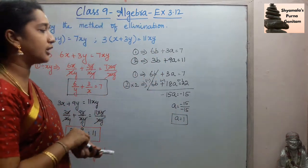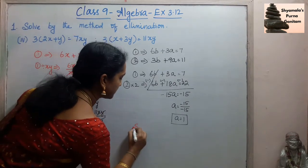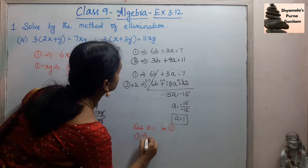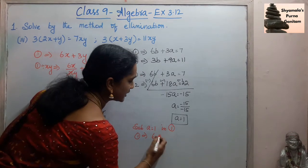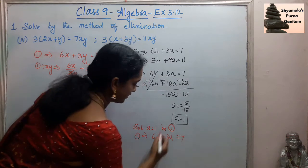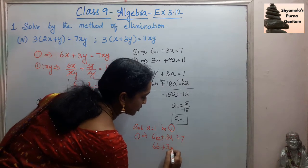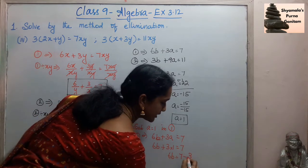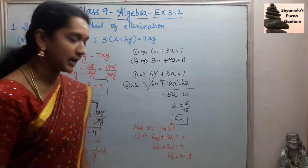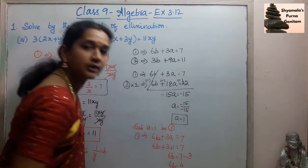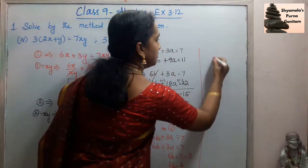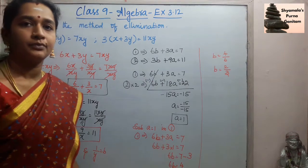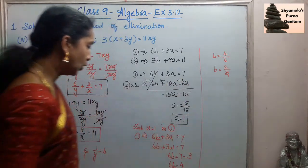So a = 1. Now substituting a = 1 into the first equation 6b + 3a = 7: we get 6b + 3(1) = 7, so 6b = 7 − 3 = 4, therefore b = 4/6 = 2/3. So b = 2/3.